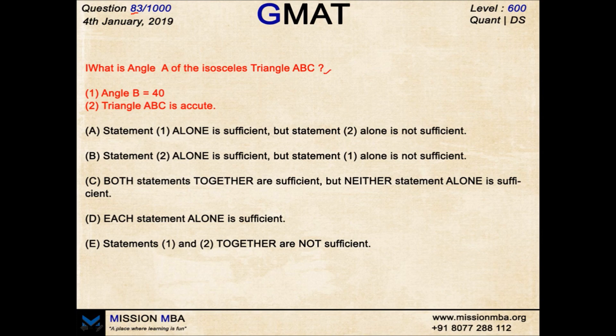to find out angle A and I know that the triangle is isosceles. Statement 1: Angle B equals 40 degrees. Is it sufficient to answer the question? No, because I do not know whether this is one of the equal angles or non-equal angles.